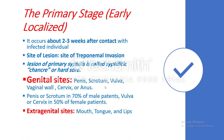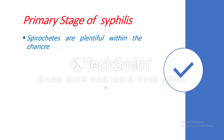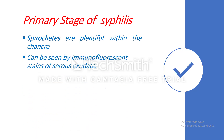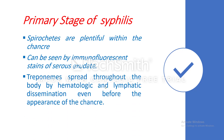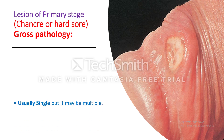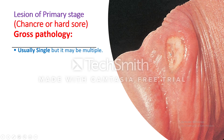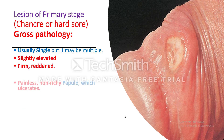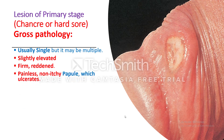Extra-genital sites include the mouth, tongue, lips, and fingers. Spirochetes are plentiful within the chancre and can be seen by immunofluorescent stain of serous exudate. Treponema spreads throughout the body by hematologic and lymphatic dissemination even before the appearance of the chancre. The primary lesion starts as a firm, reddened, painless, non-itchy papule which then ulcerates. Because it is painless and non-itchy, it may pass unnoticed.